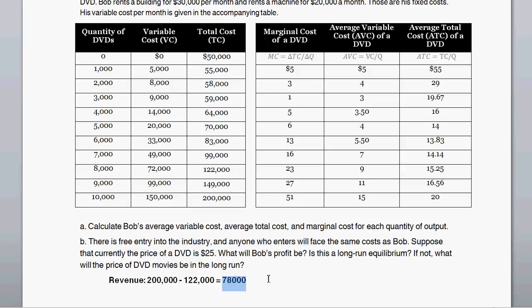In the long run, additional firms entering the market will eventually push down the price for DVDs. The point where equilibrium is reached — where entry stops — is when the price equals the minimum average total cost. The minimum ATC here is about $13.83, with a quantity produced of 6,000 DVDs per firm. So the long-run price for DVDs in this market is going to be $13.83.